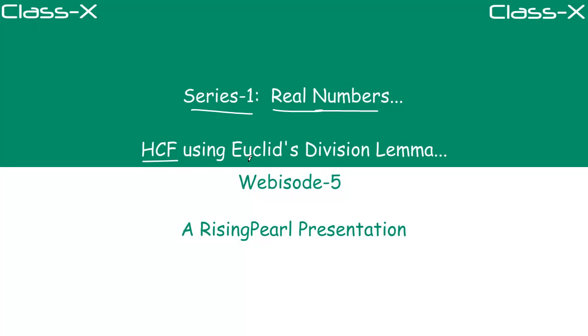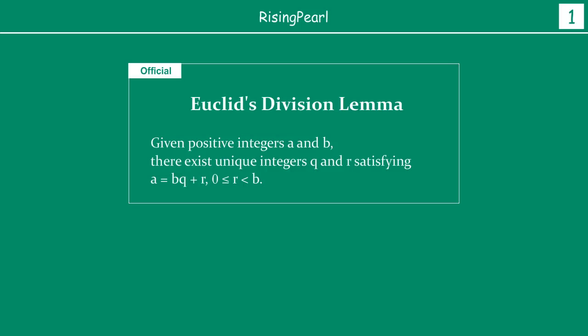Now in the last webisode we talked about what is Euclid's division lemma and in short what it states is if you have any two given positive integers a and b, there exist two other unique integers q and r that satisfy this equation: a equals b times q plus r such that r is greater than or equal to zero but less than b.